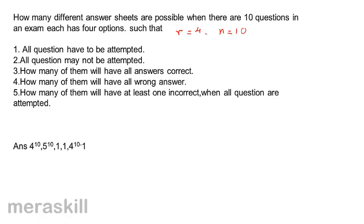Here r is 4 and n is 10. Case 1: if all questions must be attempted, he may choose A, B, C, or D — so the answer is 4 raised to 10. Case 2: if all questions may not be attempted, there is a fifth option of not attempting, so r becomes 4+1=5, giving 5 raised to 10.